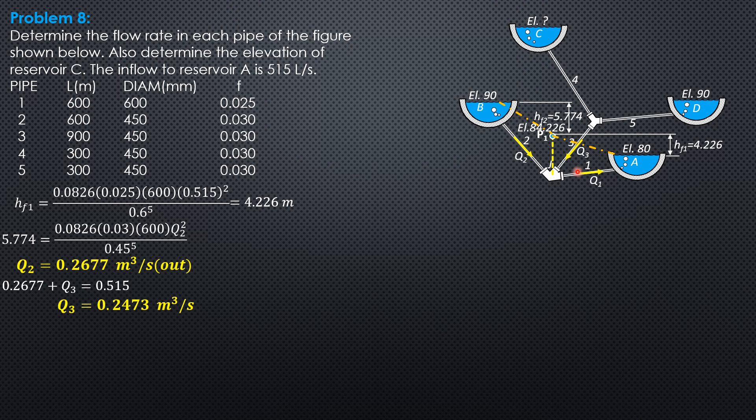Knowing Q3, we can locate the energy level of this second junction. The difference in elevation would be the head loss in pipe 3. Head loss in pipe 3: 0.0826, friction factor 0.03, length 900, discharge 0.2473 squared over diameter 0.45 to the fifth. So HF3 is 7.391.